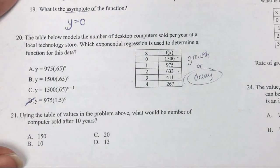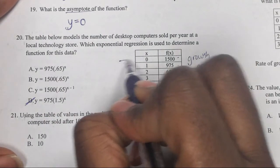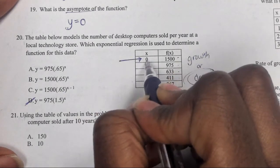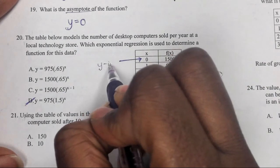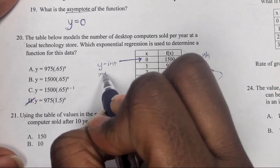The other thing you should notice, this right here is something special because where x equals zero it gives us a special number: the y-intercept, which is the initial value, which is the starting point, which is that a value. And the a value belongs in front.